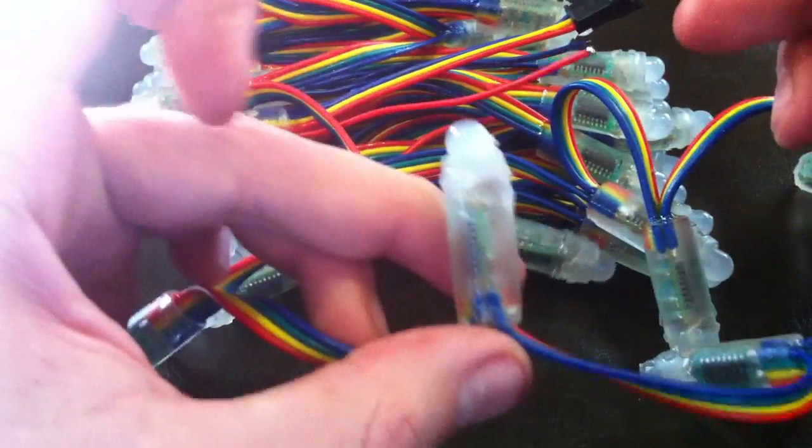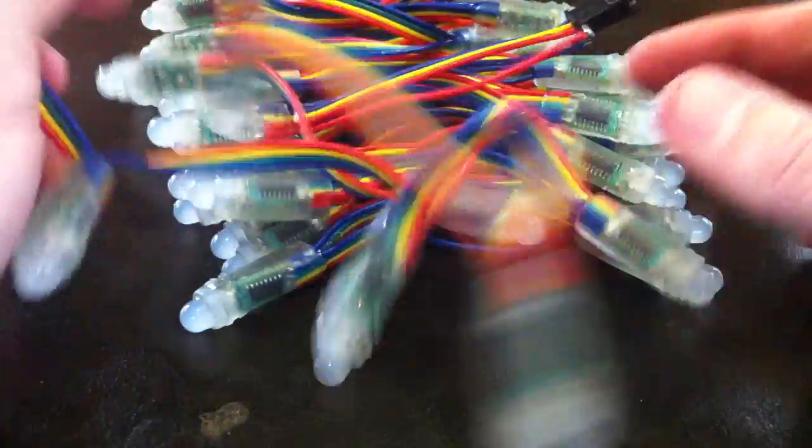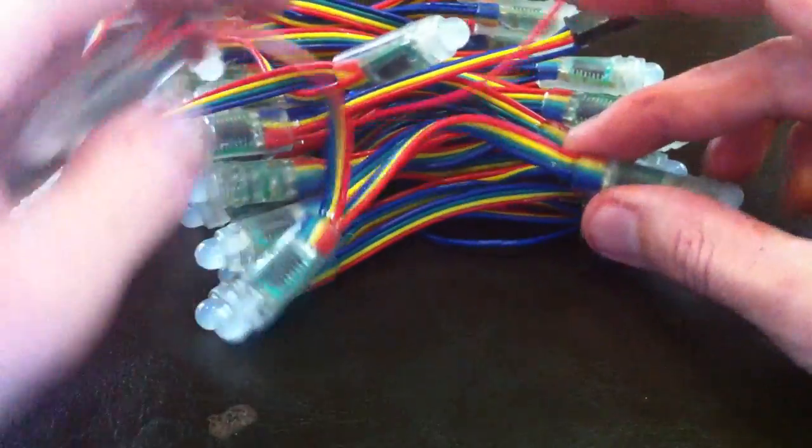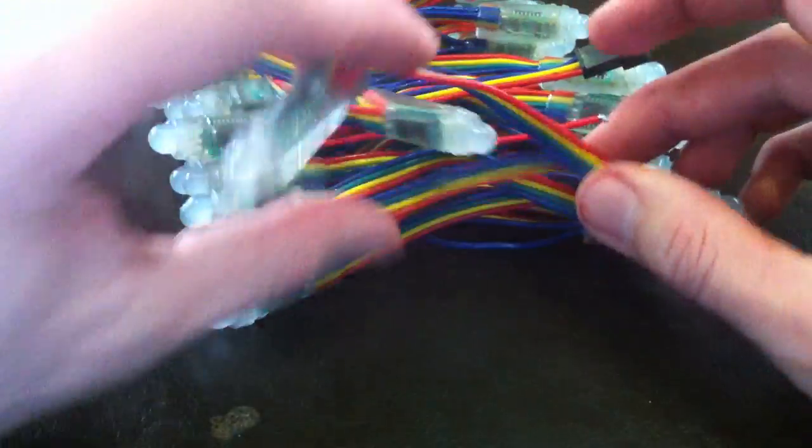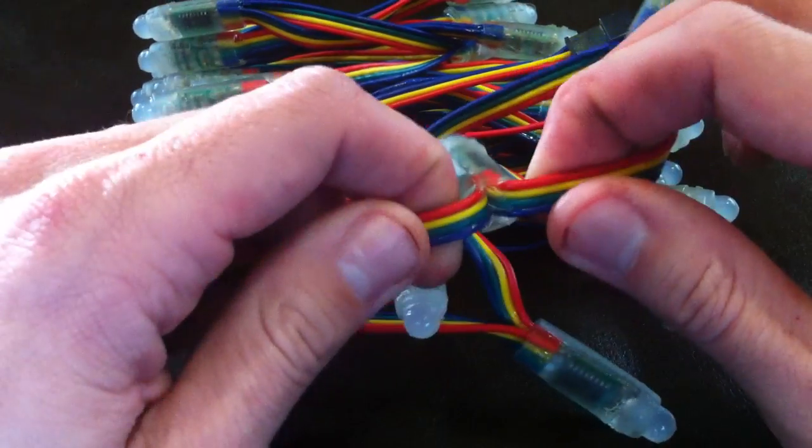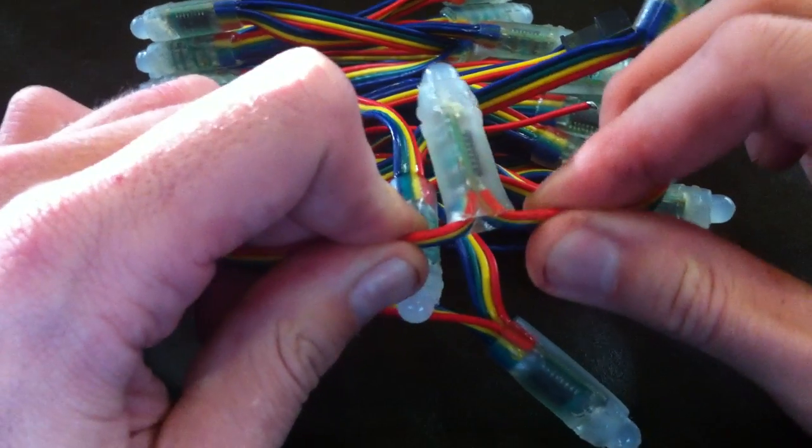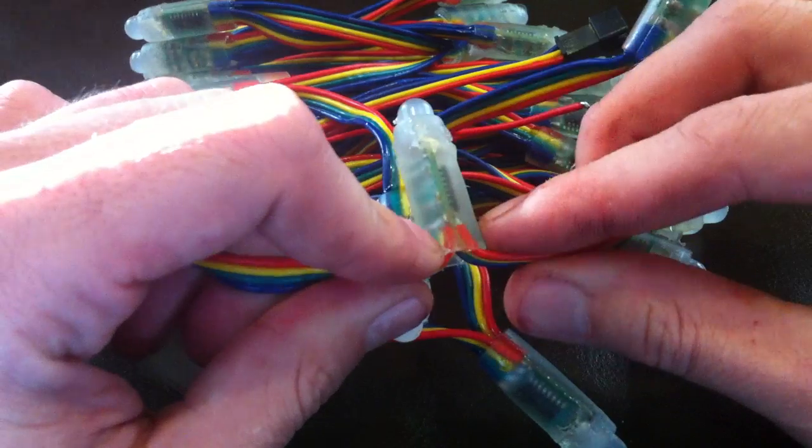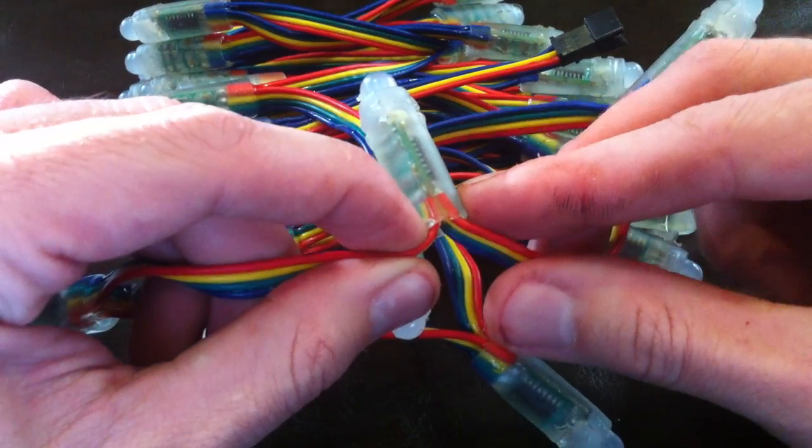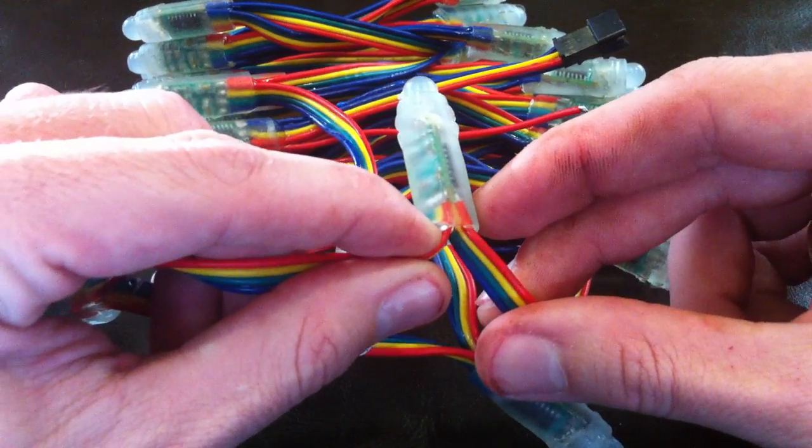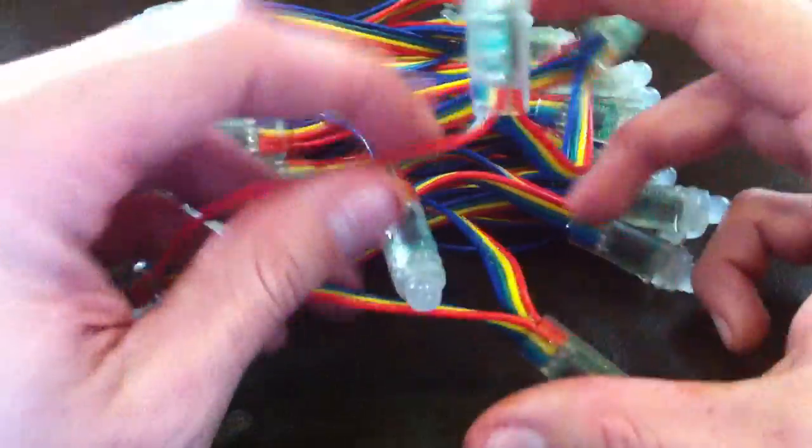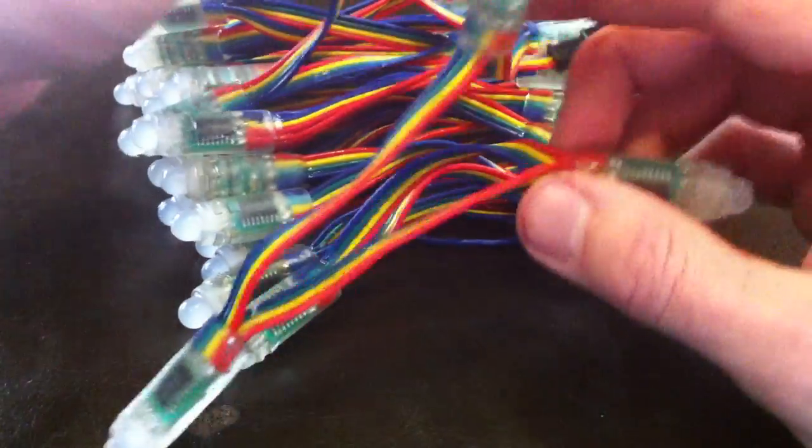The newer generation of pixel strings that are coming have a hard plastic resin filling in them, which should fix both of those issues. It should provide some strain relief so that these can't pull apart, can't stress those soldering joints, and it should answer the waterproofing issue as well.